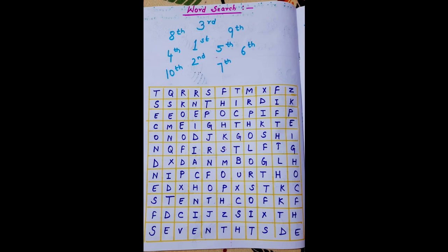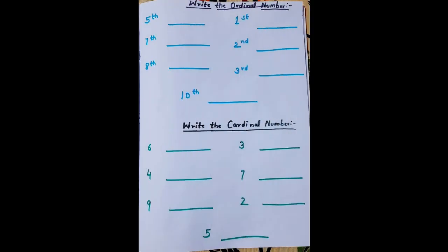This is the fifth worksheet of the ordinal number, which is a word search. Some ordinal numbers are given and the kid needs to find the spelling of each ordinal number in the puzzle below, circle it, and complete the worksheet.